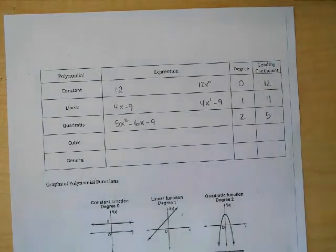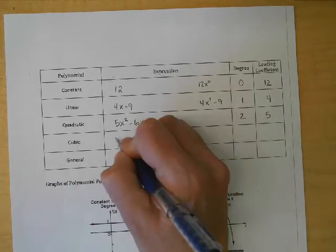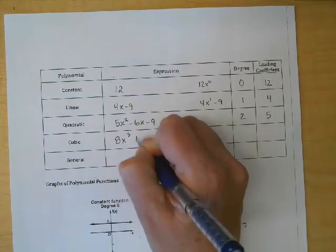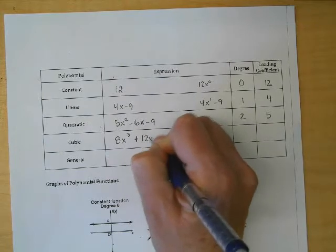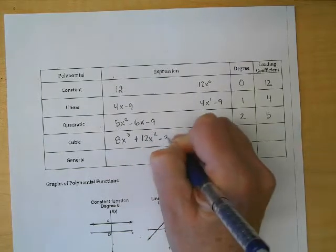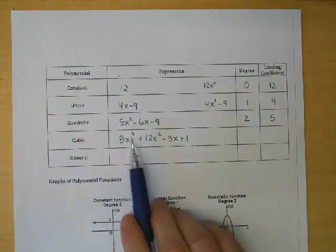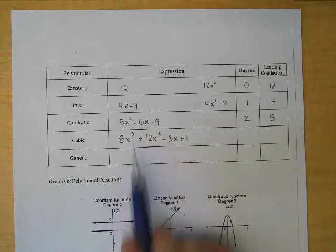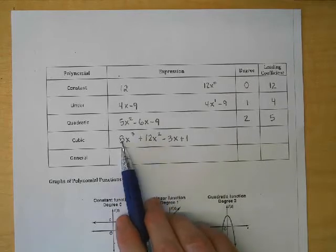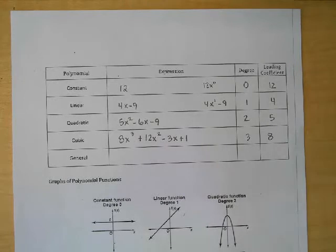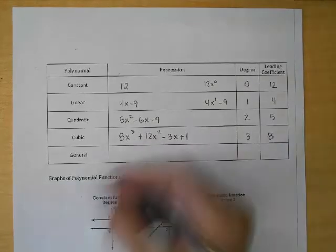As long as they're written in standard form it will always be the first number, but watch out just in case they're not in standard form. Something that's cubic would be like 8x³ + 12x² - 3x + 1. This is written in standard form with the highest exponents first, so that's its degree and that's its leading coefficient.